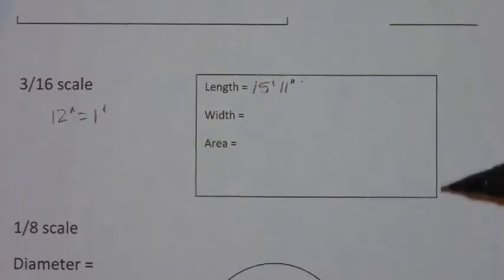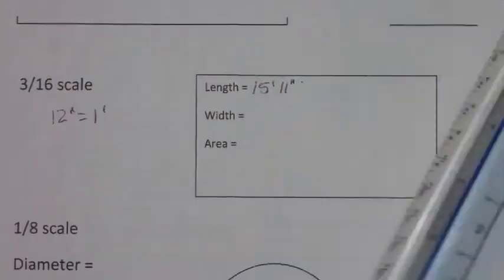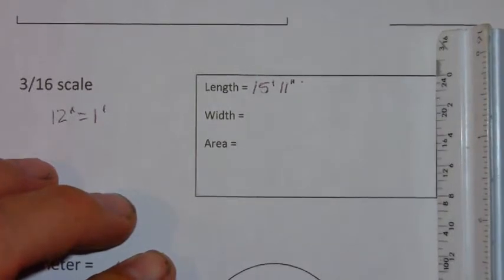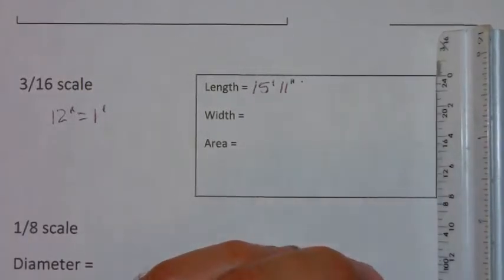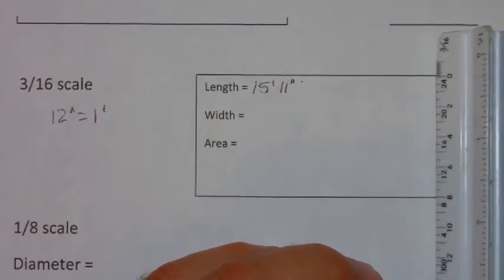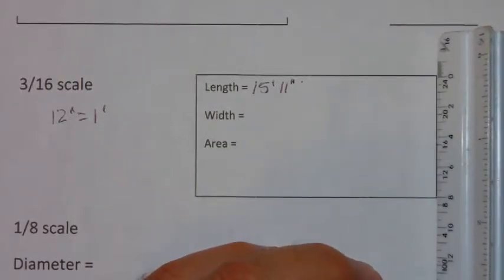Now let's measure the width. Here we can see that the line is just a little bit longer than eight. So shift the scale so that the eight lines up with the bottom edge and count the number of increments.